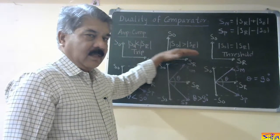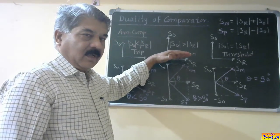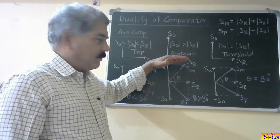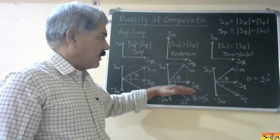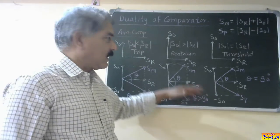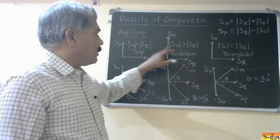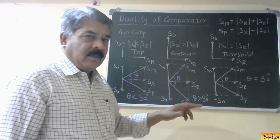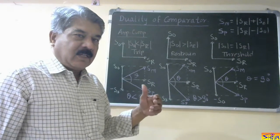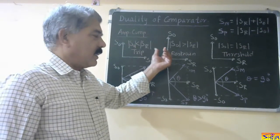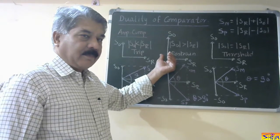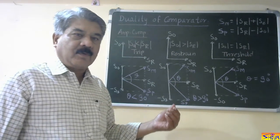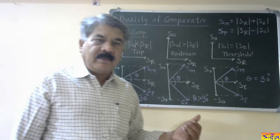The comparator which is originally there is called the inherent comparator, and when we convert it, it is called the converted comparator. Now I will explain how the conditions of the phase comparator can be generated by the amplitude comparator by changing the input quantities to their sum and difference.